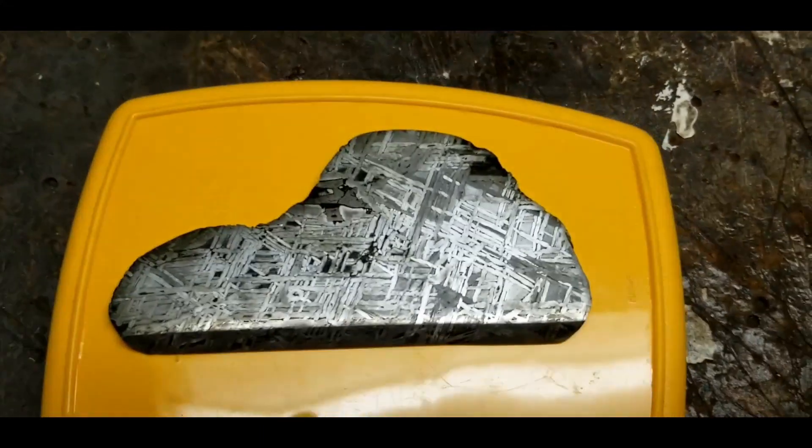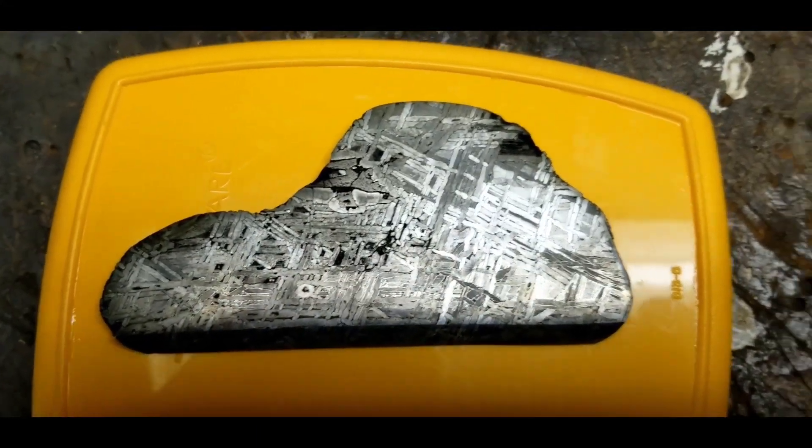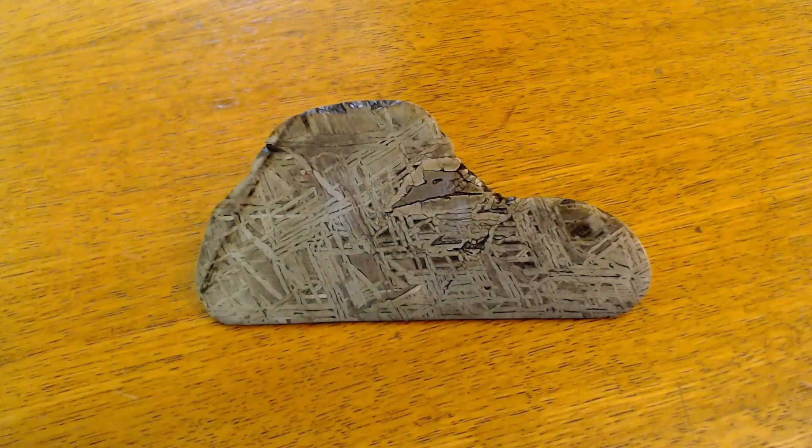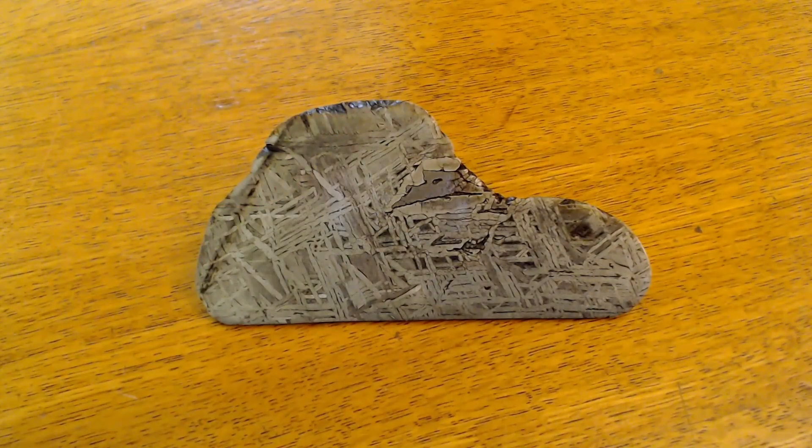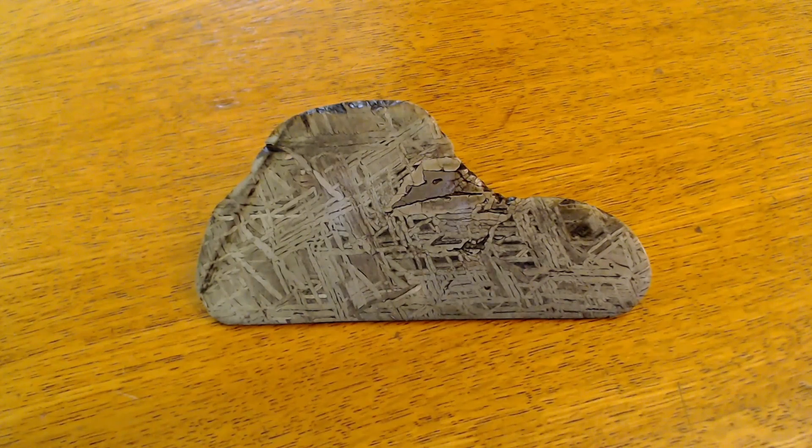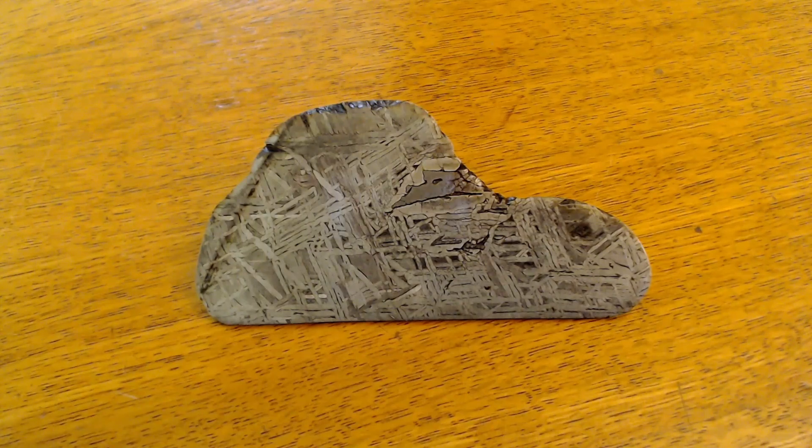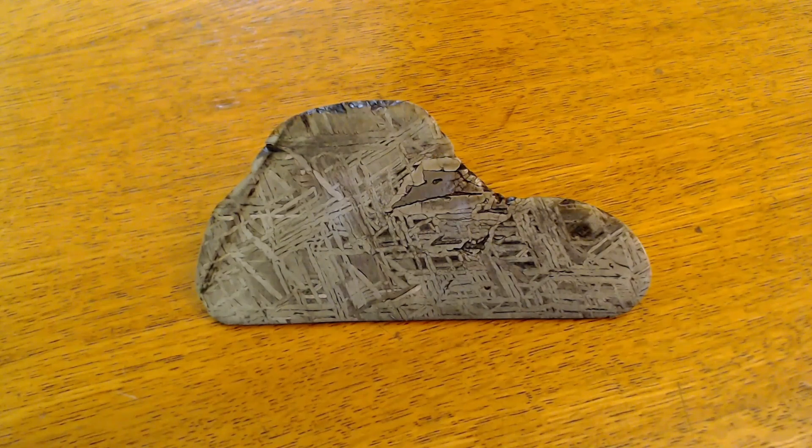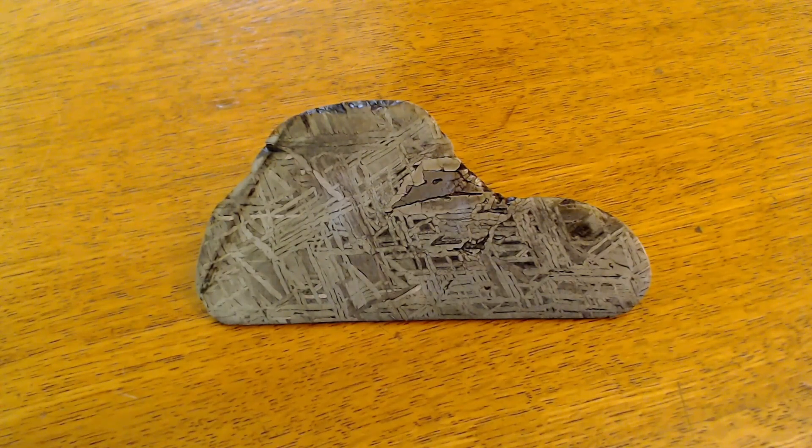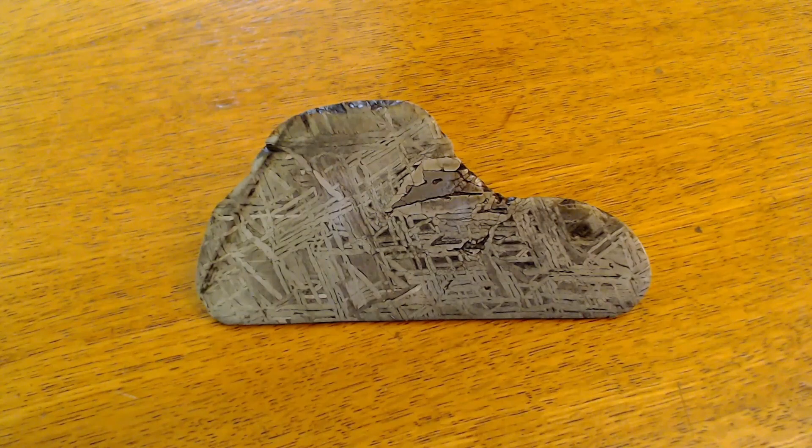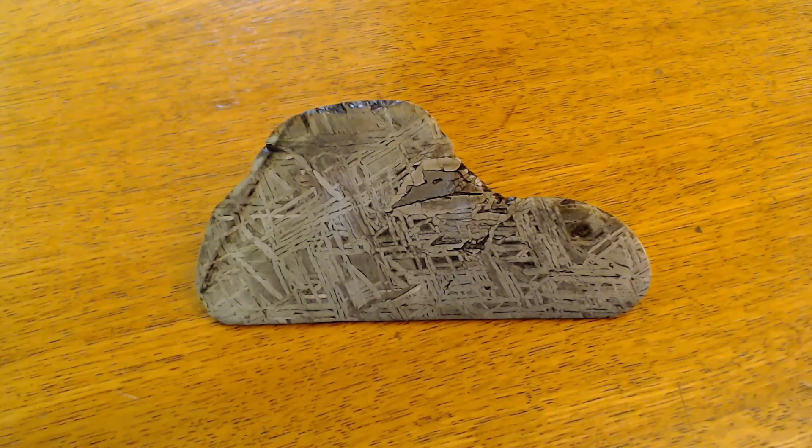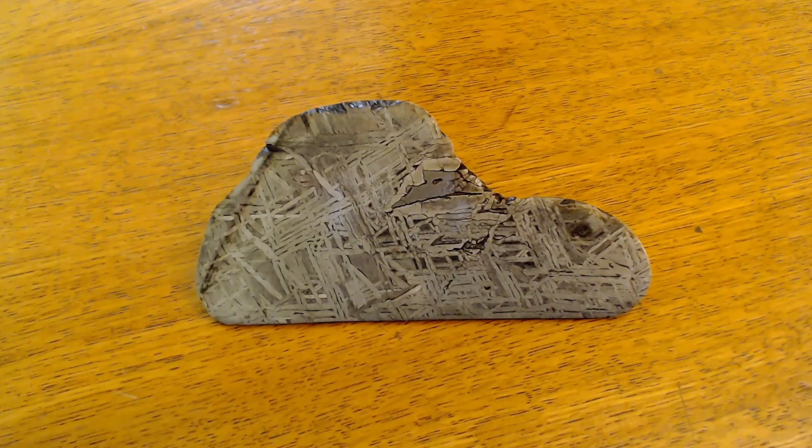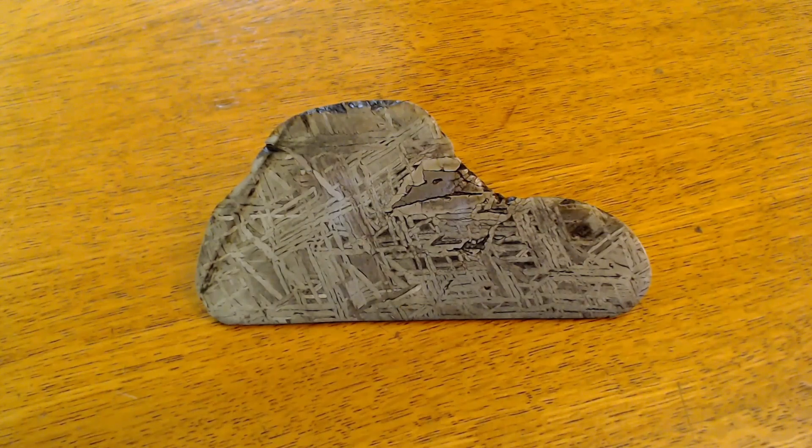I completed the processing on the slice. First I soaked it for 24 hours in isopropyl alcohol. Following that I baked it for three hours at 225 in an oven to remove any moisture. Following that, of course, let it cool down. I applied a coat of the meteorite corrosion protection PaleoBond.